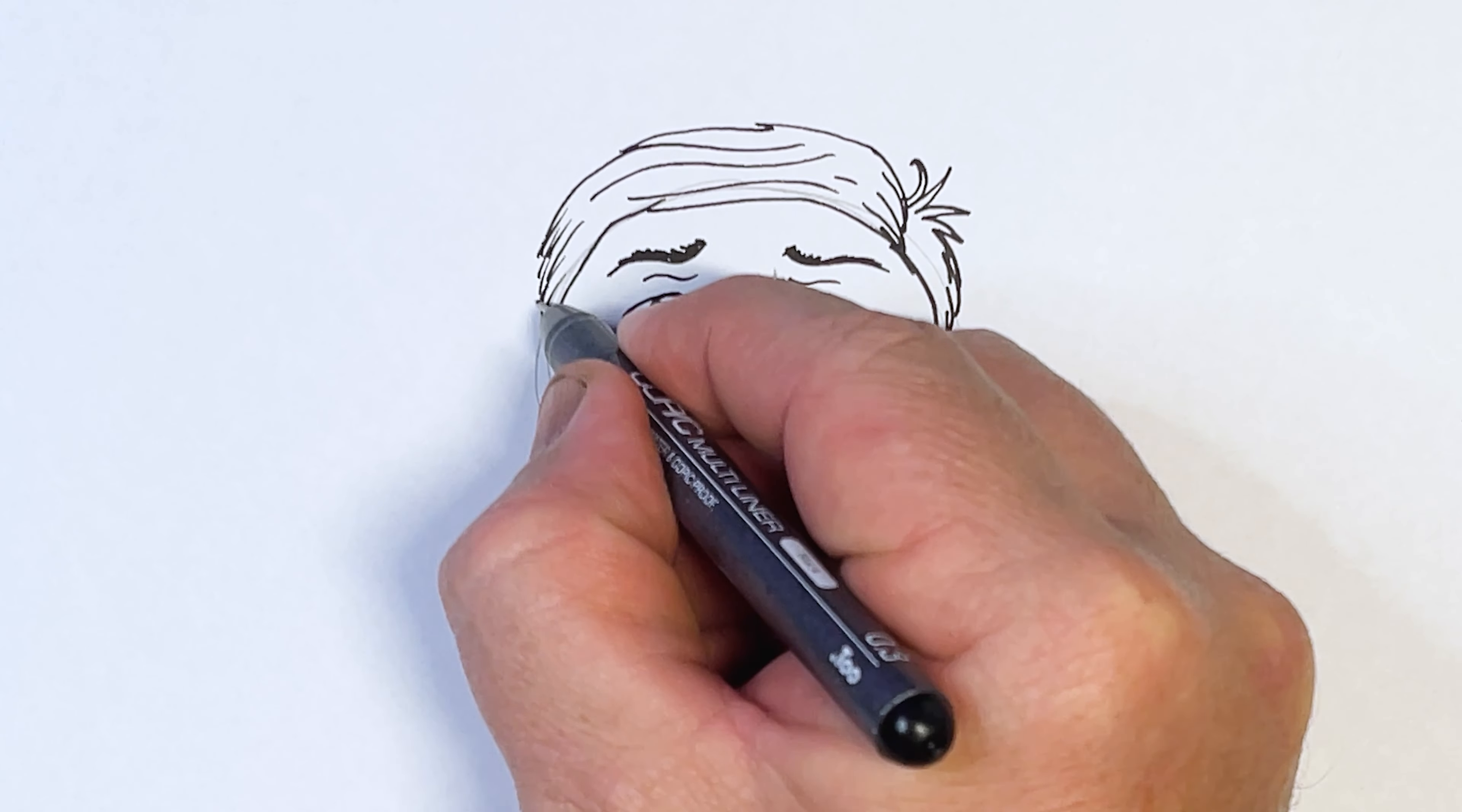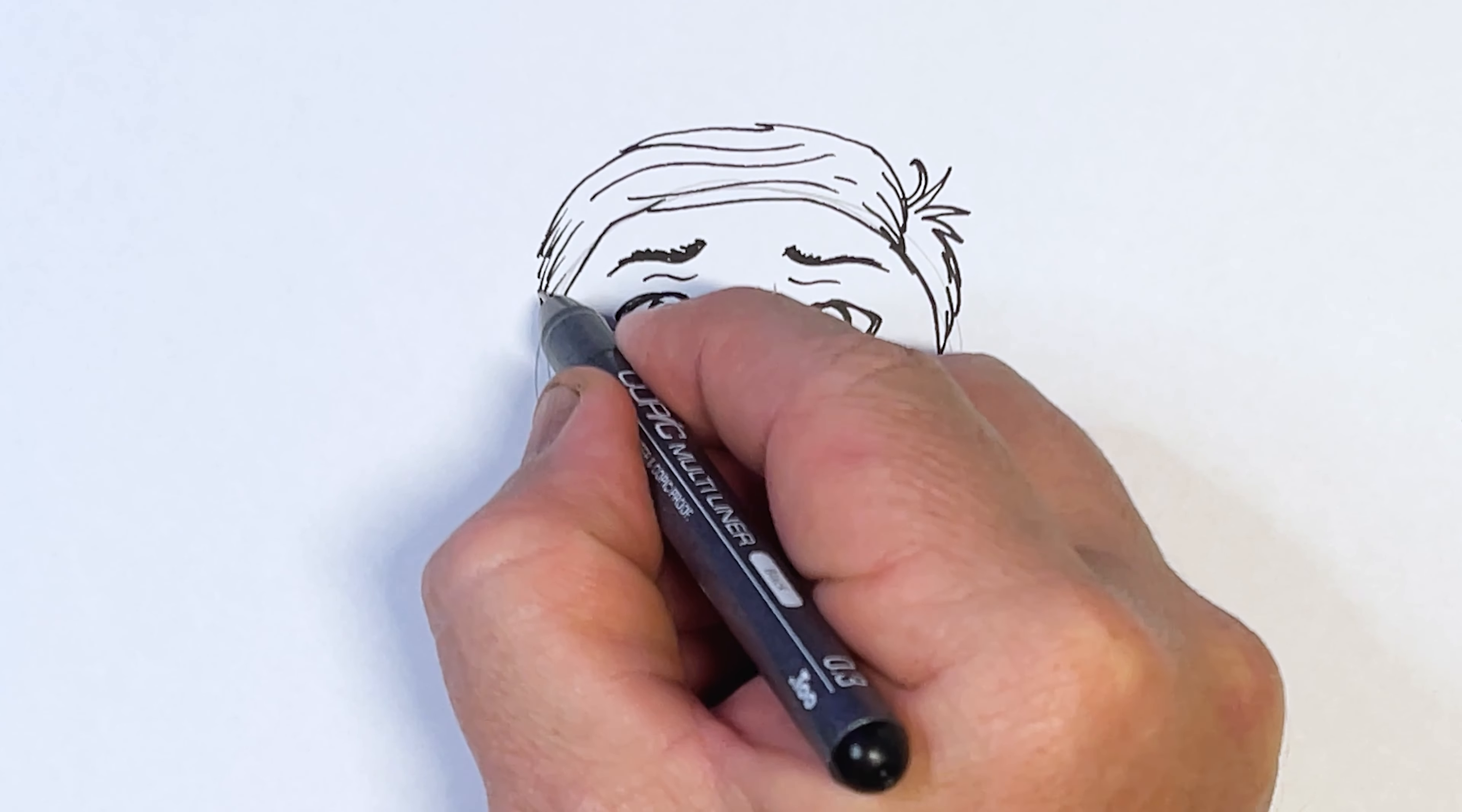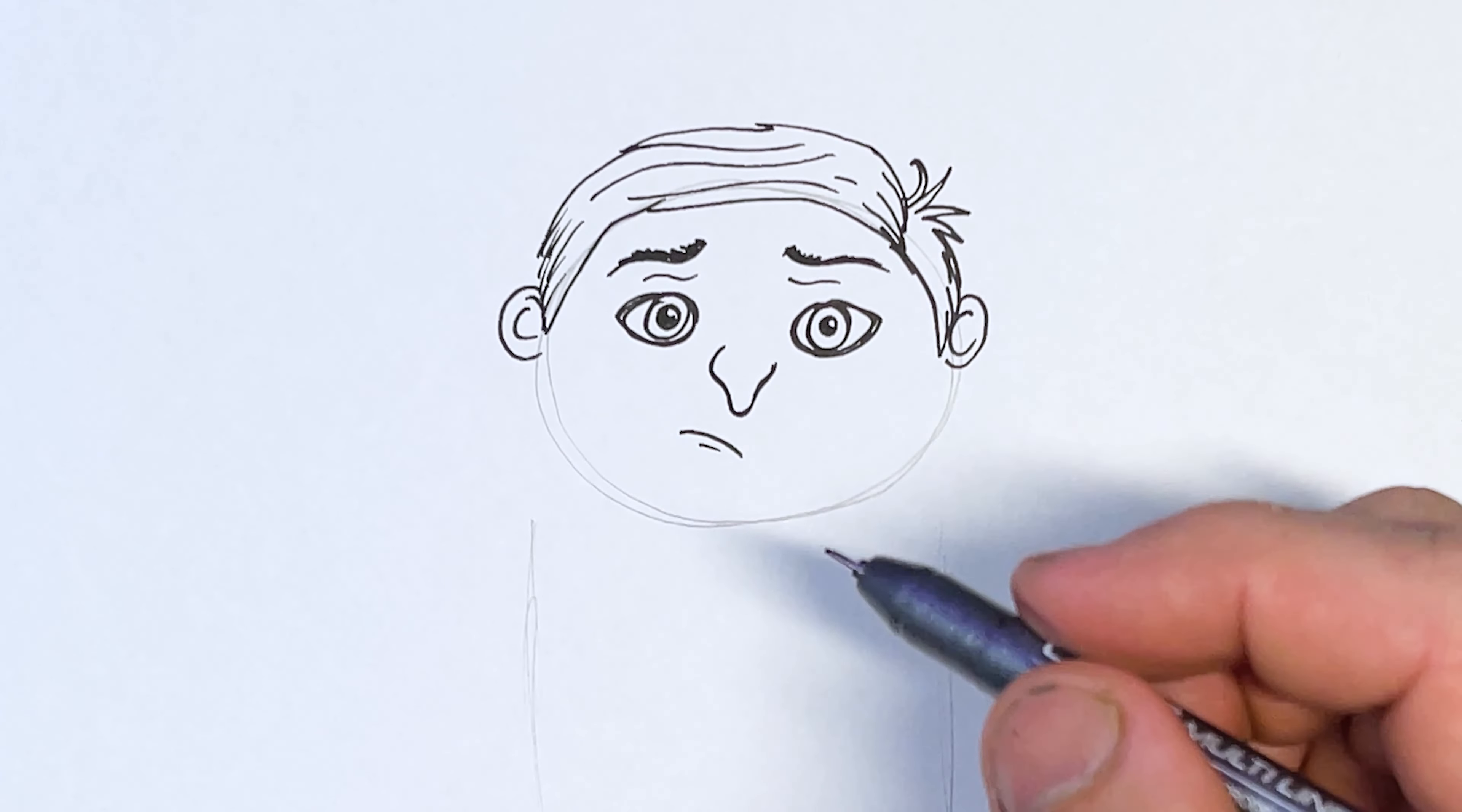And then on this side we've got his ear about the same height as his eyes. Just going to go around those eyes. Make sure they're the same sort of size. I may need to make that one a bit bigger. Let's make his ear that sort of size. Roughly the size of his eyes. Bit of a curve shape. Another curve shape like that. Going to do a curve shape with a line there.